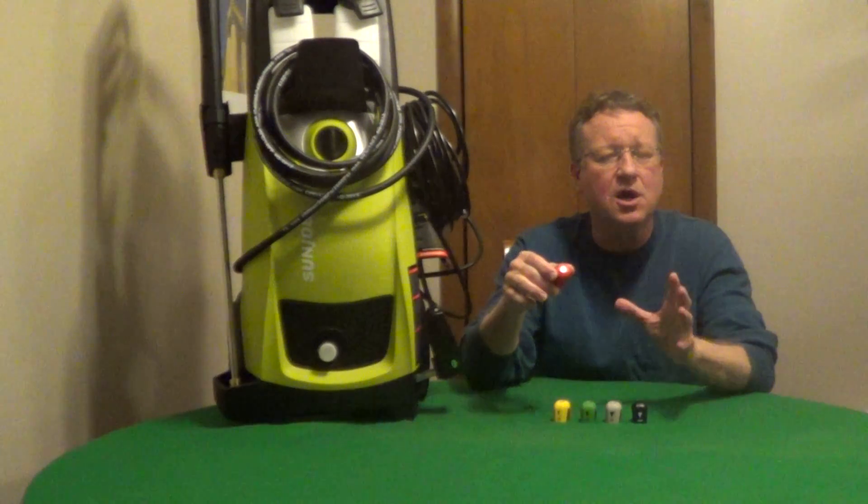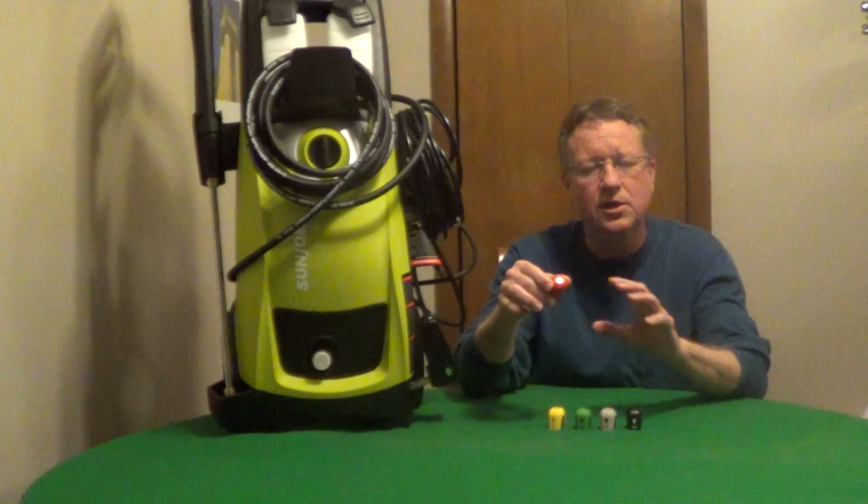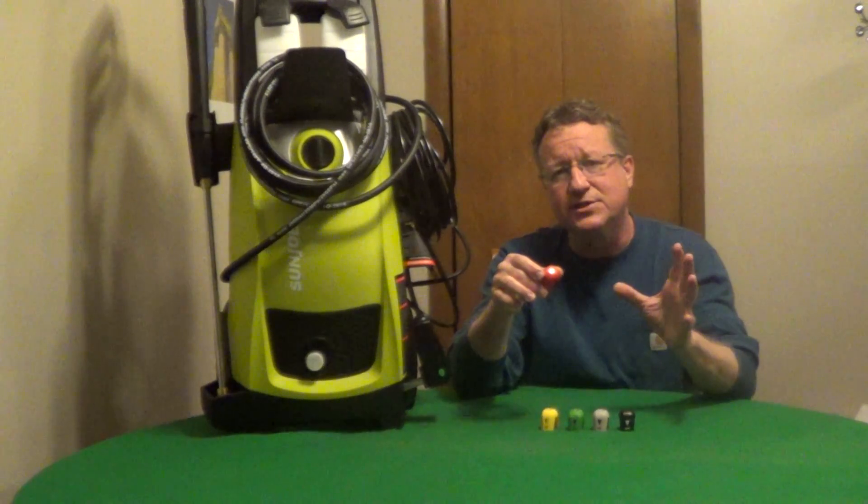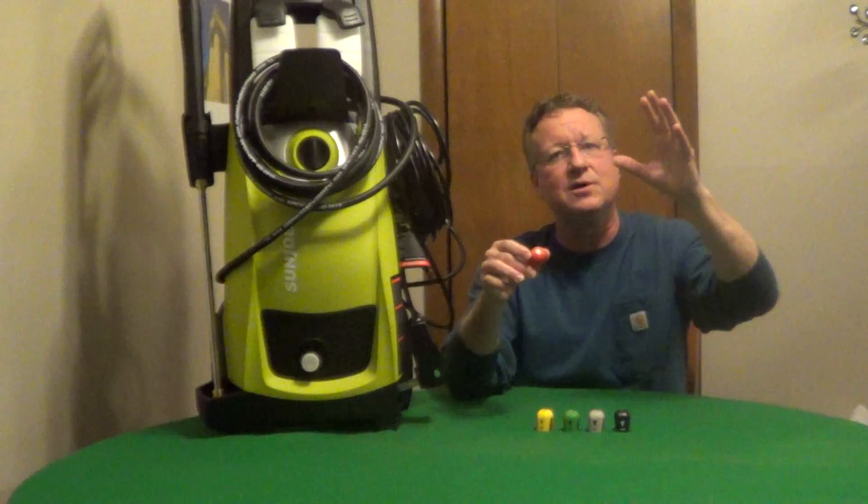The zero degree nozzle is designed for hard material like concrete and steel, great for removing tar and grease off driveways, also for long distance if you're cleaning, let's say, the eaves on the second floor of your house.